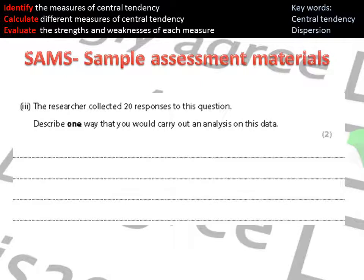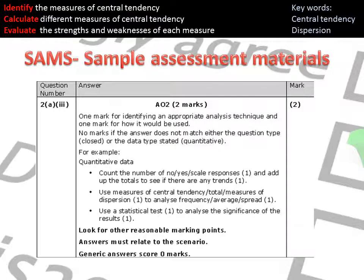It's really important that you know this, girls, because you need to understand how this is applied as well. So the SAMs, the sample assessment materials released by Edexcel, this is an example question. A researcher collected 20 responses, describe one way that they could analyse this data. If we have a look at the mark scheme, you can see that using a measure of central tendency will only get you one mark. But if you outline that you understand that that is to analyse the frequency or the spread or the average, then that will get you two marks for this question. Also, you could put that you can use a statistical test, but for one mark. For the second mark, you need to explain that you understand that that will analyse the significance or the amount of significance within the results.